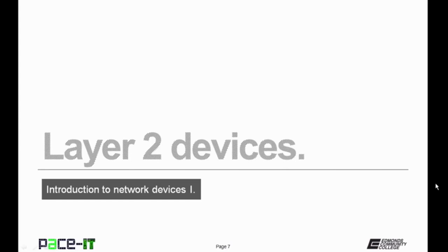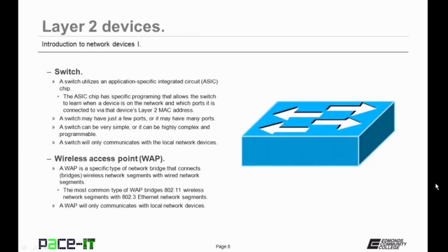Now let's move on to Layer 2 devices. The first Layer 2 device that we're going to talk about is the switch. A switch utilizes an application-specific integrated circuit chip, an ASIC chip. The ASIC chip has specific programming that allows the switch to learn when a device is on the network and which ports it is connected to via that device's Layer 2 MAC address. That's what makes a switch a Layer 2 device.